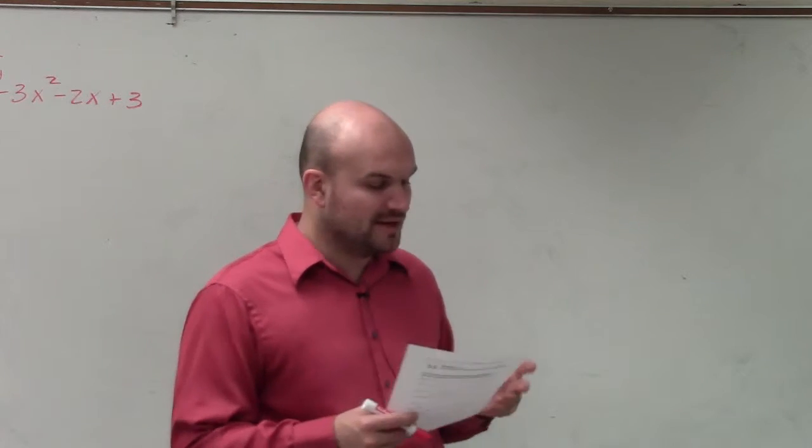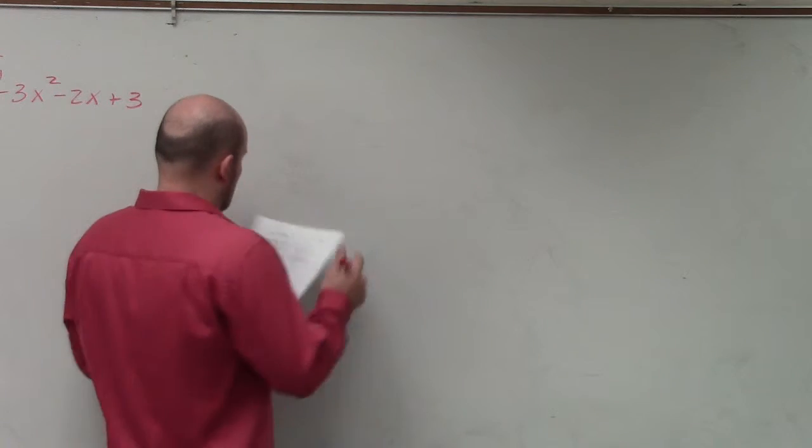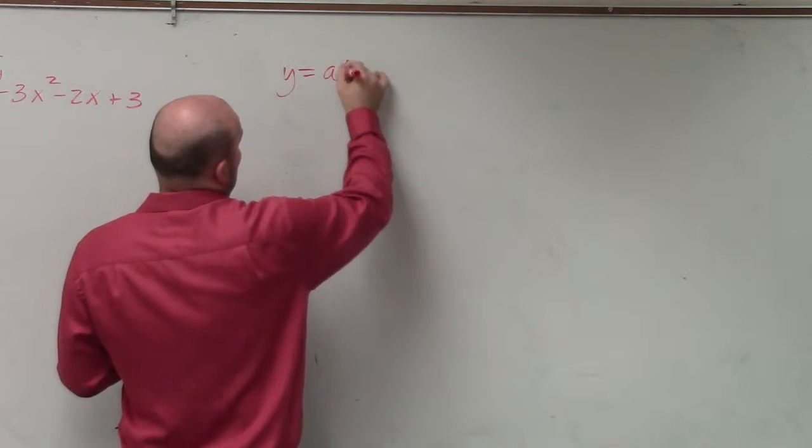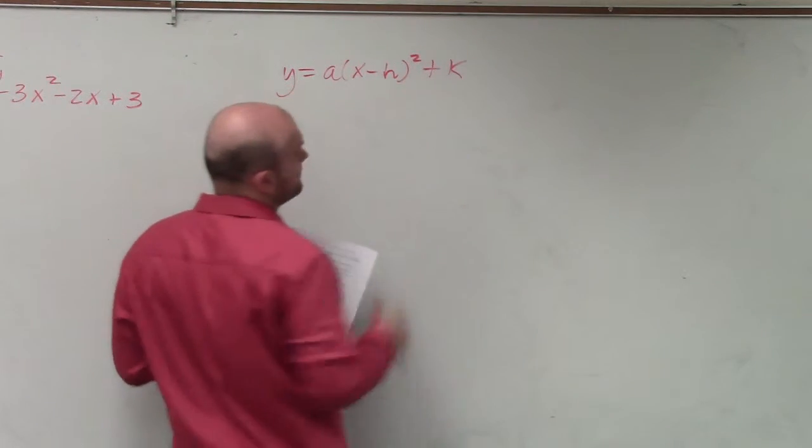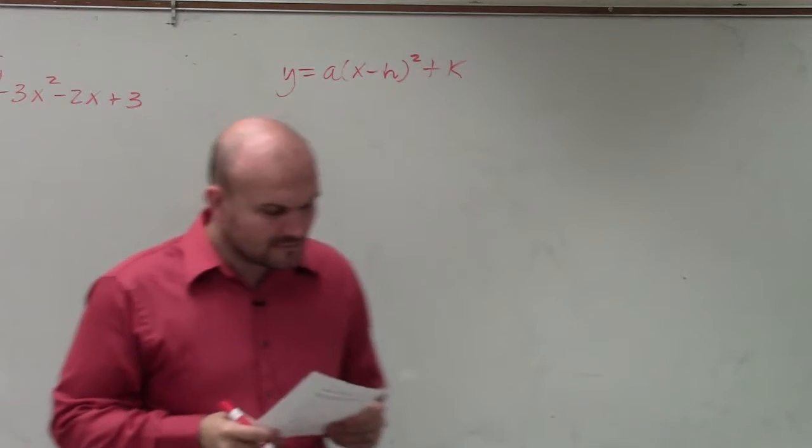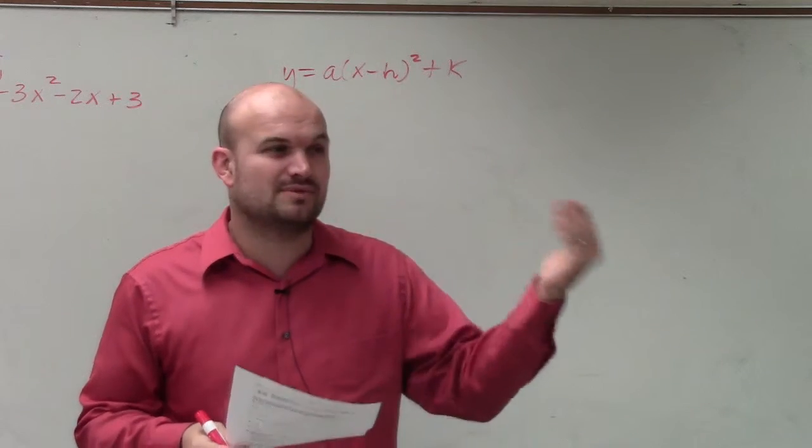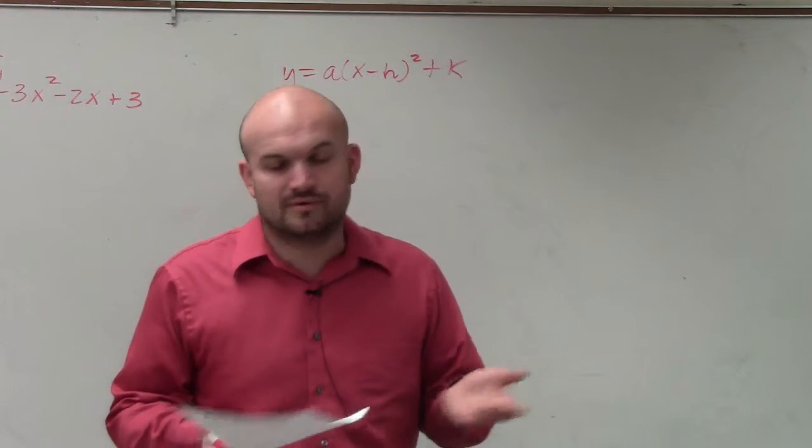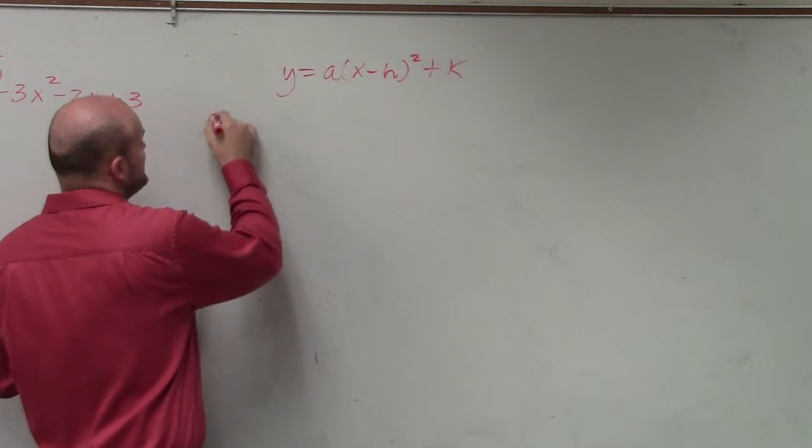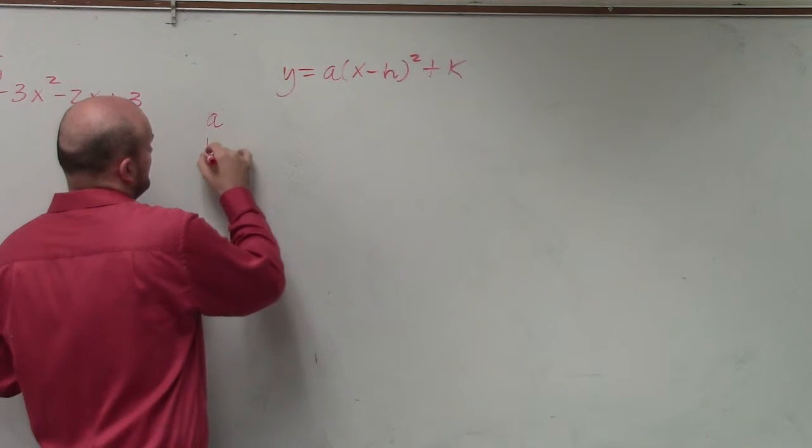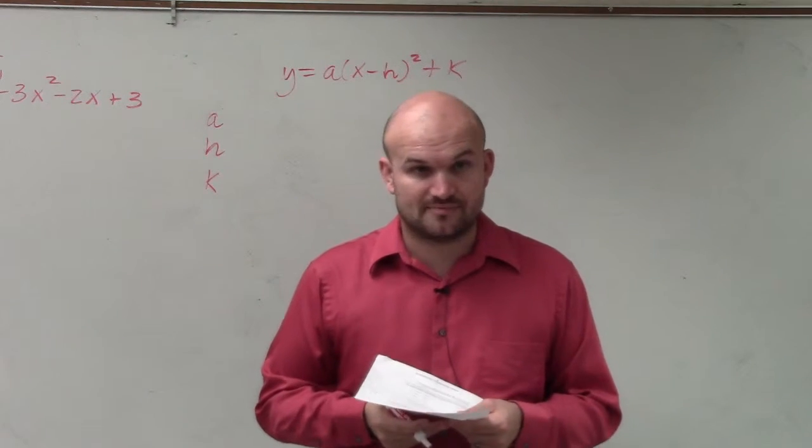Now, in this one, we have our equation y equals a times x minus h squared plus k. Right? So first of all, let me go and do this if we were going to talk about the reflection of the x-axis, because that's the one we're more commonly known for. So basically, to write the equation, we really just need to figure out what a is, what h is, and what k is. Would everybody agree with me?